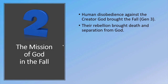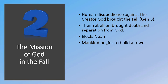God saw the wickedness prevalent in the human heart and started over by sending a flood. He chose to not abandon or destroy his creation completely. Instead, he elects Noah to build an ark through which his family and animal life would be saved, as we see in Genesis 6-10. Over time, mankind begins to build a tower that would reach the heavens, seeking to build a name for themselves. So God divides the people and they are scattered throughout the land, as we see in Genesis 11.